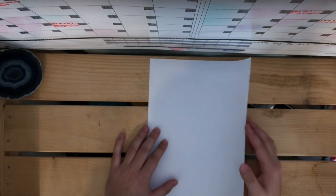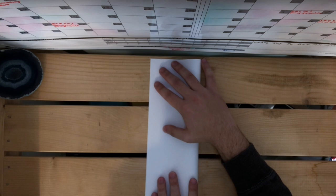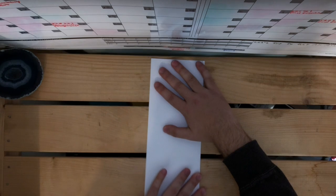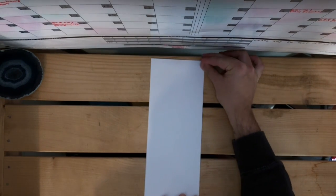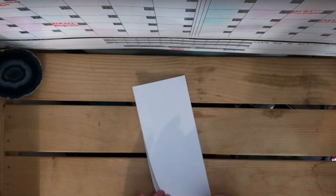You're going to want to take your paper and fold it in half hot dog style, the long way like this. Press down, and then open it up.